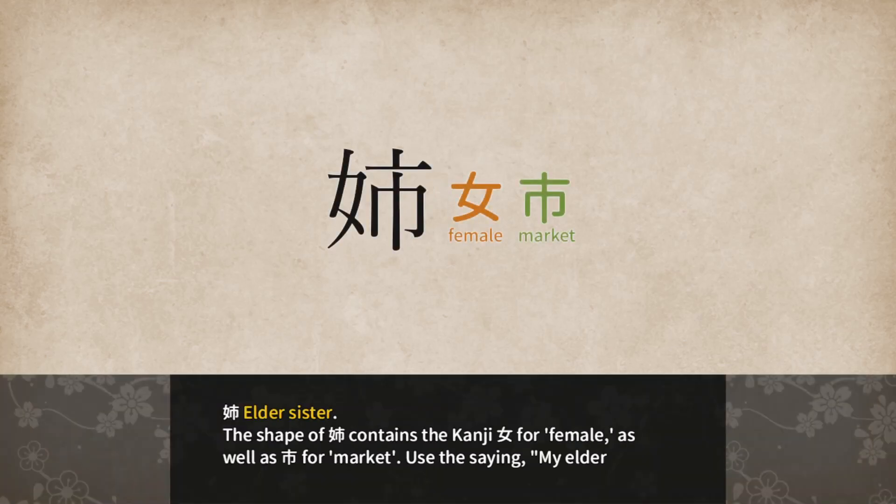The shape of Ane contains the kanji Onna for female as well as Ichi for market. Use the saying: my elder sister works at the market.